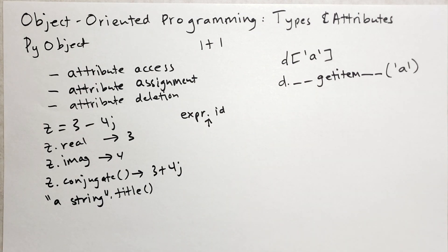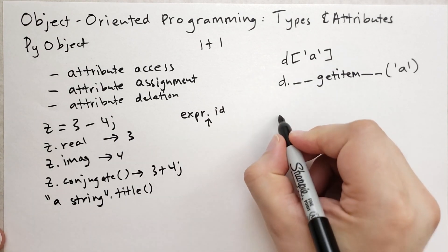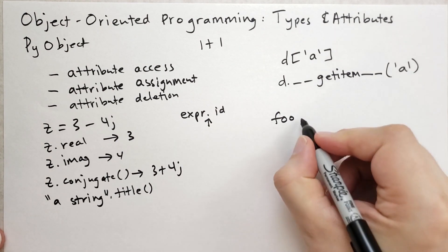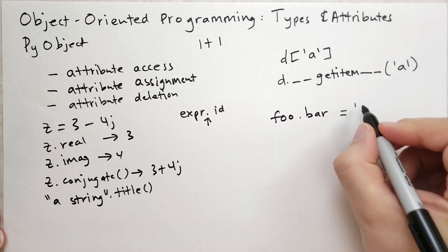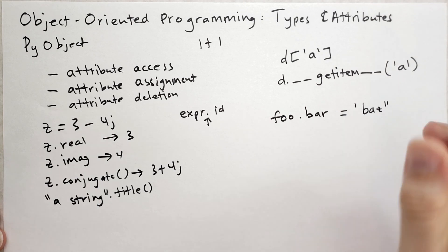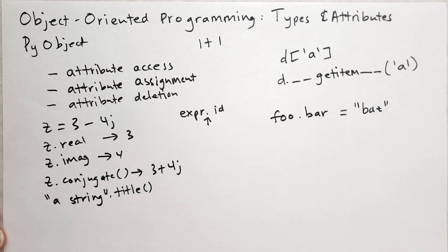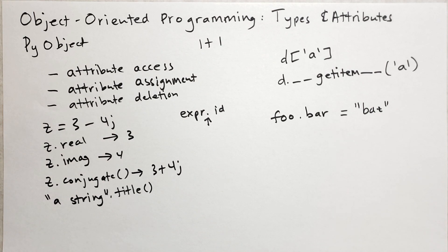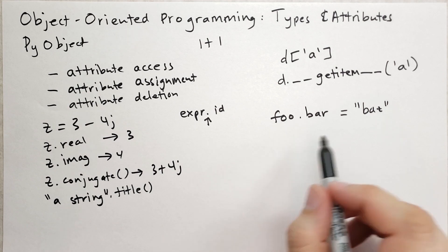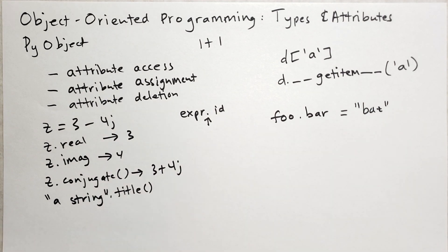But what about attribute assignment? As you might imagine, if you had an object that you've defined called foo and you want to specify the bar attribute, you can just put it in an assignment statement like this. And that will assign baz to the bar attribute of foo.